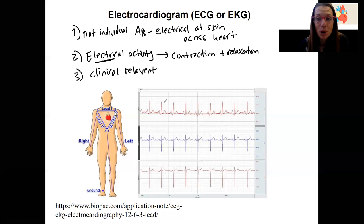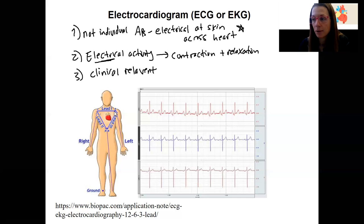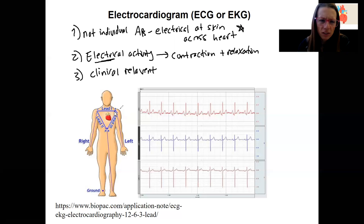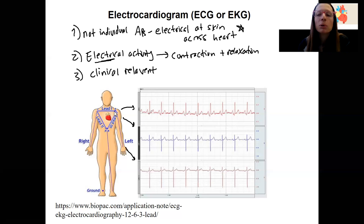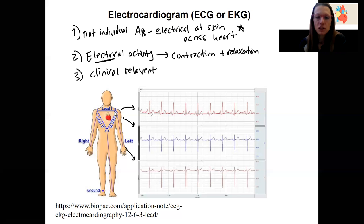Before showing the components, I want to give you a sense of how we obtain this information. This diagram is showing where you'd place different electrodes on the surface of the skin — you will do this in lab. The signal reflects the direction of the impulse relative to those electrodes. Depending on three different electrode placements, you get very different-looking signals because the measurement is relative to where each electrode is positioned. There are different types of EKGs; we'll focus on one so you can learn that one.